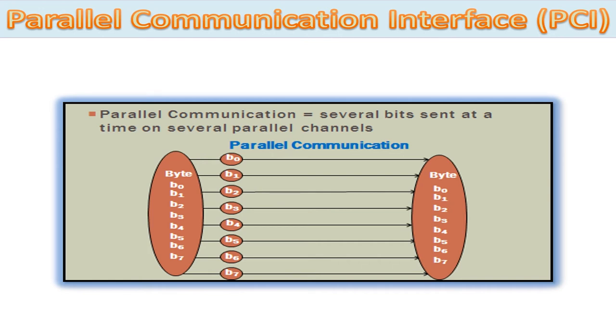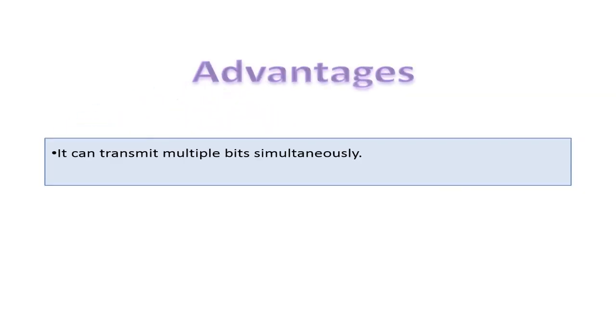These 8 bits are transmitted parallel to each other on the data bus. Standard parallel port is capable of sending 50 to 100 kilobits of data per second. The advantages: it can transmit multiple bits simultaneously, and it does not require any high-frequency operation.